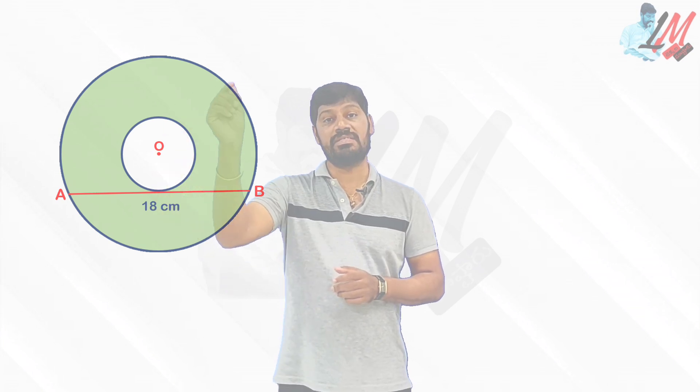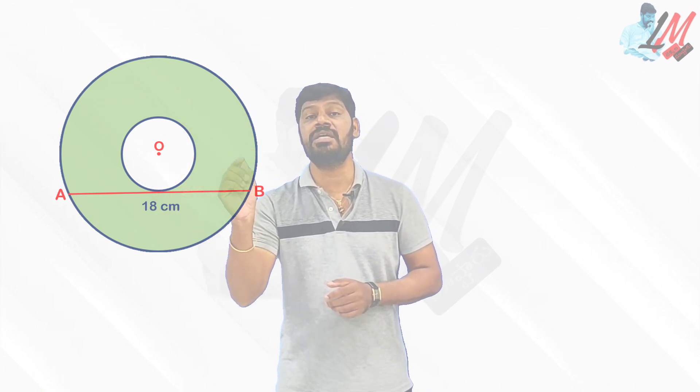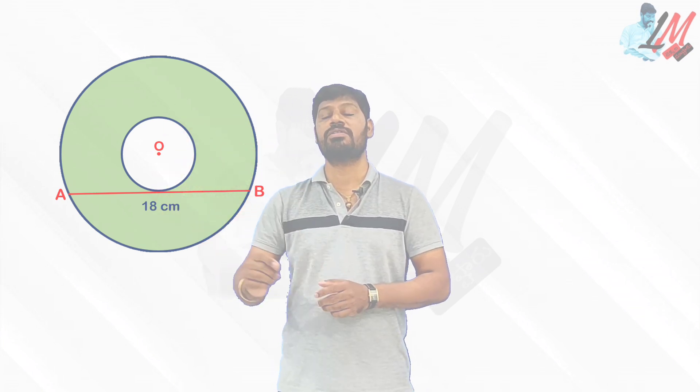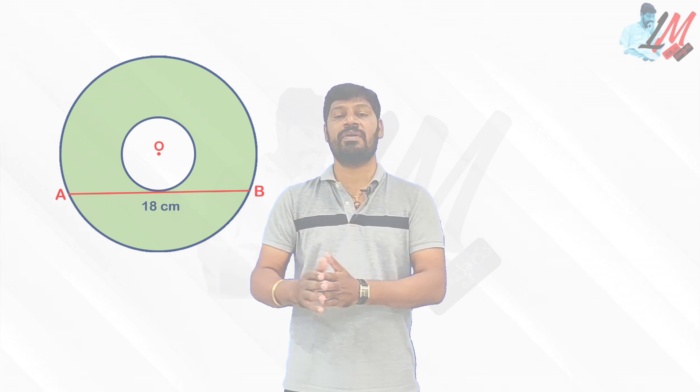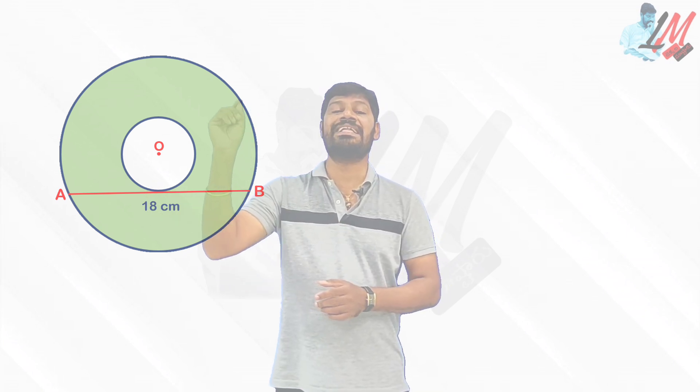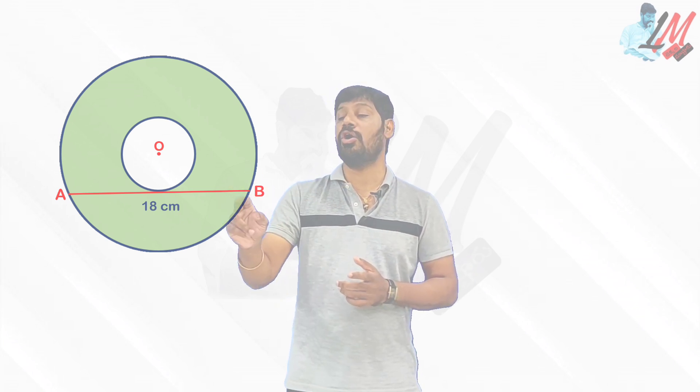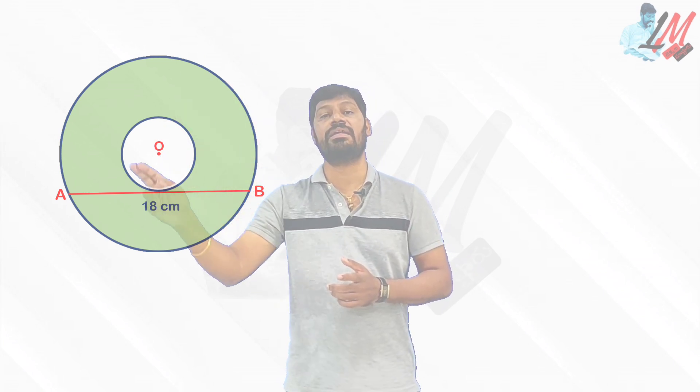One small piece of information was given: a chord of the big circle which is a tangent to the small circle — AB — whose length is 18 centimeters. Surprisingly, they are asking: what is the area of the entire ring?